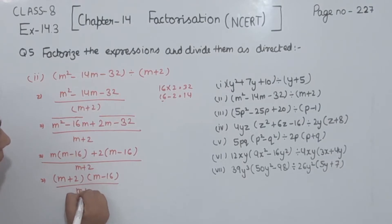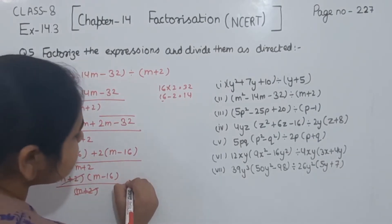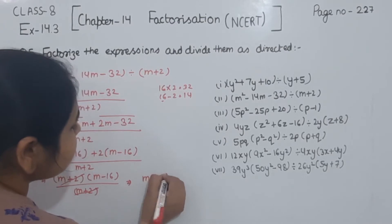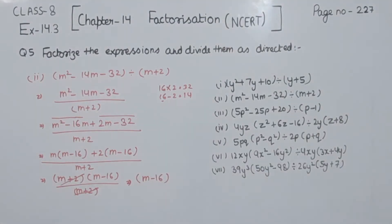Now m plus 2 is cancelled from m plus 2. So the solution we are having is m minus 16 for part 2.